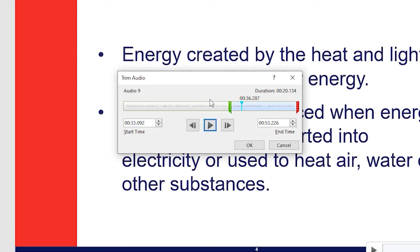So that's where the second bullet point starts. That's where all the rambling and the unnecessary audio is. So I'm effectively leaving that unnecessary audio out. I've got the correct in point for the second bullet point. Let's continue playing this. Sun is converted into electricity or used to heat air, water or other substances. Stop there.